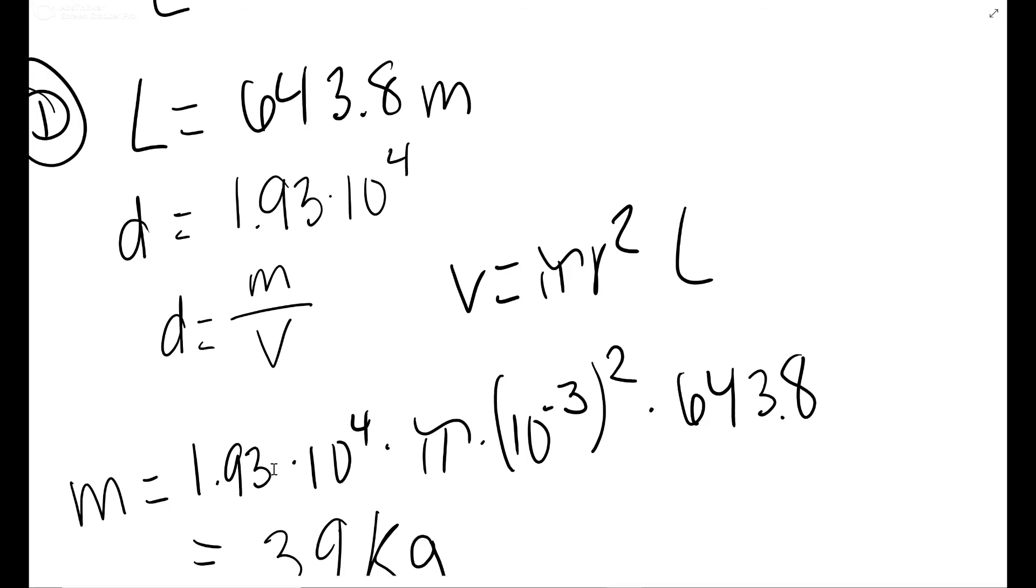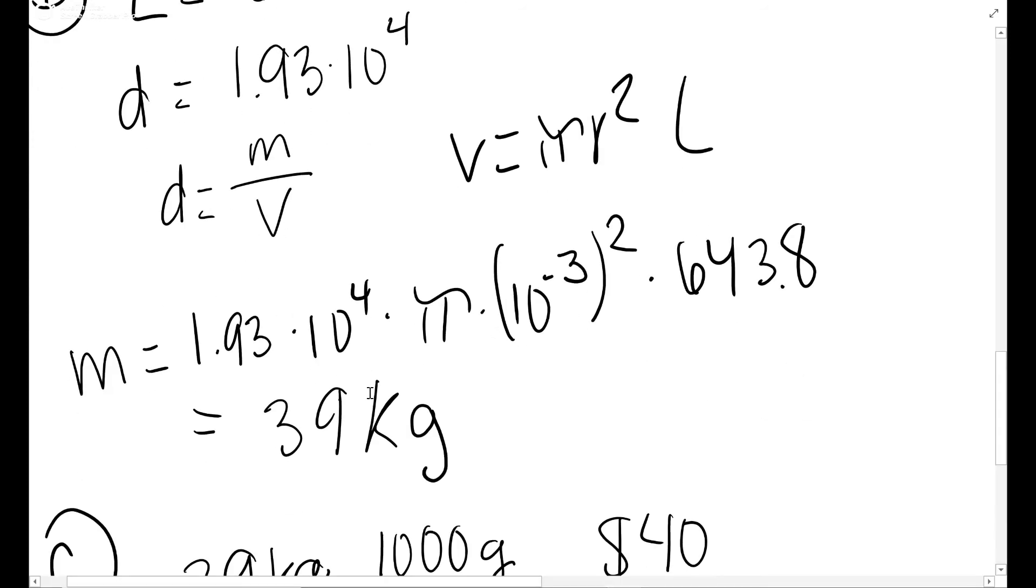Here's the density, 1.93 × 10⁴, times this volume, which is π times the radius, 10⁻³ meters, times the length, and you get 39 kilograms. Very easy.